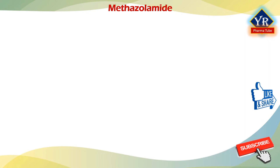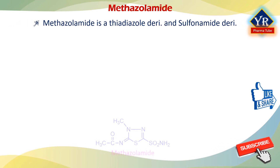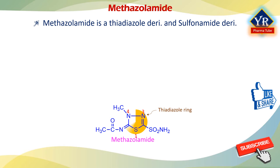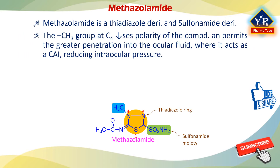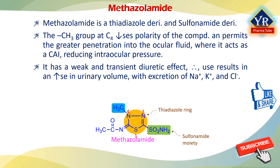The second drug is methazolamide. Similar to acetazolamide, methazolamide is also a thiadiazole derivative and a sulfonamide derivative. It is a close structural analog of acetazolamide in which one of the active hydrogens in the thiadiazole ring has been replaced by a methyl group. This methyl group decreases polarity of the compound and permits greater penetration into the ocular fluid, where it acts as a carbonic anhydrase inhibitor reducing intraocular pressure. It has a weak and transient diuretic effect, resulting in an increase in urinary volume with excretion of sodium, potassium, and chloride ions.